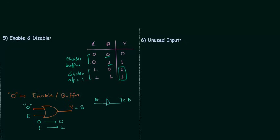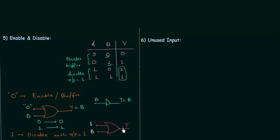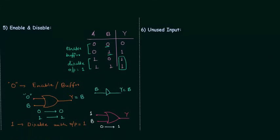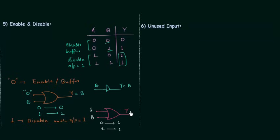Now for disable: 1 is acting as disable for OR gate with output equal to 1. For a 2-input OR gate where first input is 1 and second input is B — when B is 0 output is 1, and when B is 1 output is again 1. So output is fixed and equal to 1. OR gate is disabled when one of the inputs is equal to 1. This is all for enable and disable.